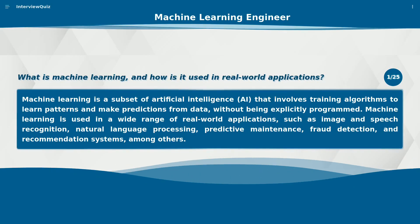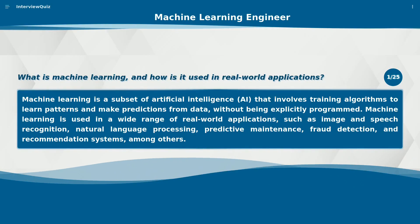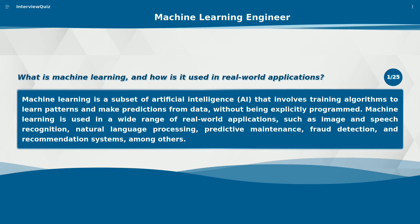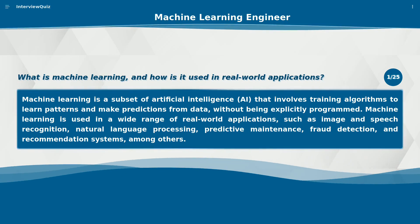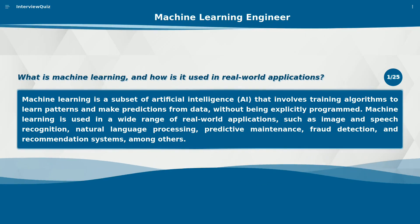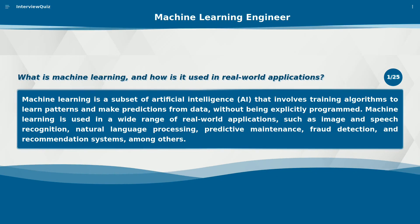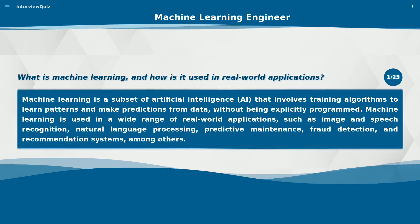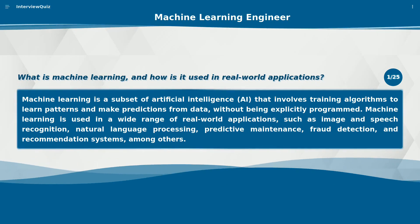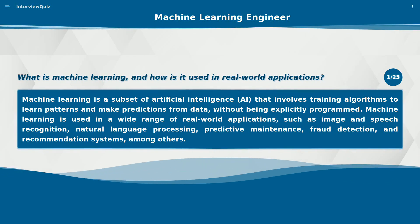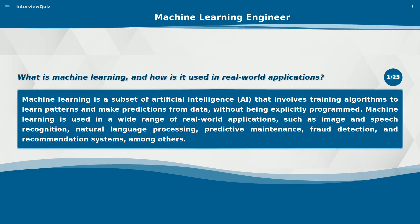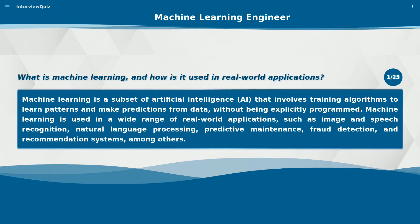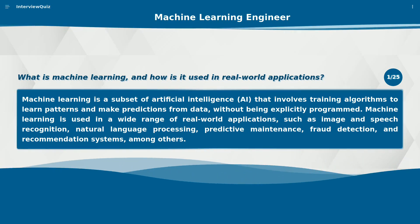What is machine learning and how is it used in real-world applications? Machine learning is a subset of artificial intelligence (AI) that involves training algorithms to learn patterns and make predictions from data without being explicitly programmed. Machine learning is used in a wide range of real-world applications, such as image and speech recognition, natural language processing, predictive maintenance, fraud detection, and recommendation systems, among others.